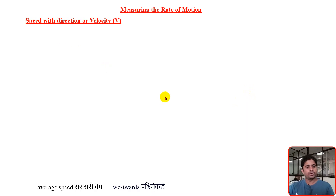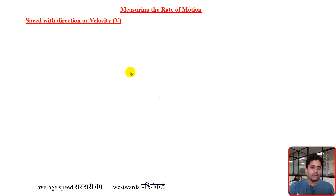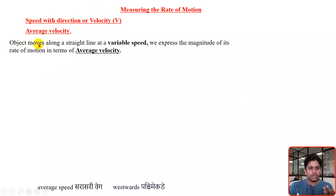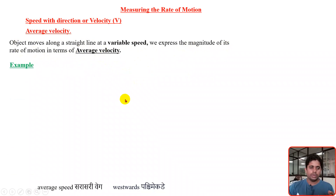Hello everyone. In the last video we discussed about speed with direction, or velocity. In this video we will discuss more about the term velocity. Regarding speed with direction or velocity, there is one more term we will use generally — the name of the term is average velocity. So now, what is the meaning of average velocity? When an object moves along a straight line at a variable speed, we express the magnitude of its rate of motion in terms of average velocity.